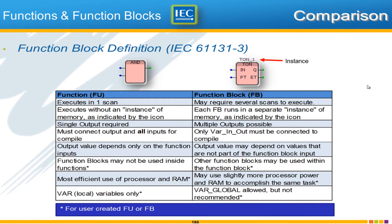Let's start with a comparison of functions versus function blocks, using an example of AND and TEON, two blocks we've used. The first distinction of an IEC 61131 function versus function block is that every single function will execute in one scan — one scan through the code and the inputs produce the output. This is not necessarily the case with a function block. Think of the block TEON: several scans are necessary just to tell how much time has gone by.